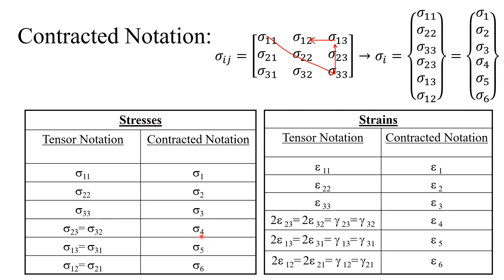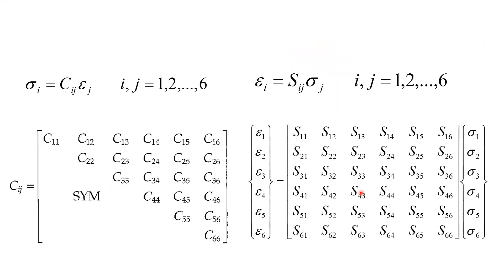The same contracted notation applies for strains. For strains, we have both gamma and epsilon — gamma is twice epsilon. Epsilon is the tensor strain; gamma is the engineering strain. Using this contracted notation, we can simplify our elasticity and compliance matrices and write them as a 6×6 matrix, relating six stresses to six strains. That would be our compliance matrix.